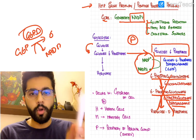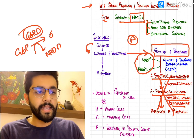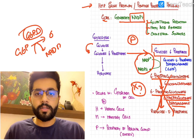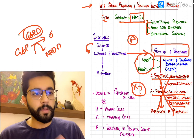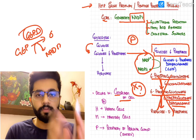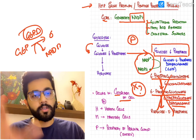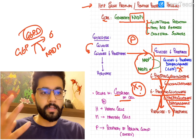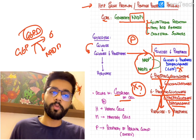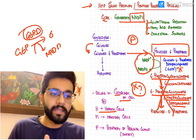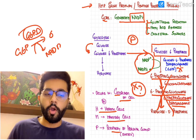A few more points to know about every pathway: most importantly, where the pathway happens — nucleus, cytoplasm, or mitochondria. The HMP shunt pathway happens only in the cytoplasm of the cell, because the enzyme G6PD is found only in the cytoplasm. It's commonly seen in hepatic cells, mammary cells, and the adrenal cortex.